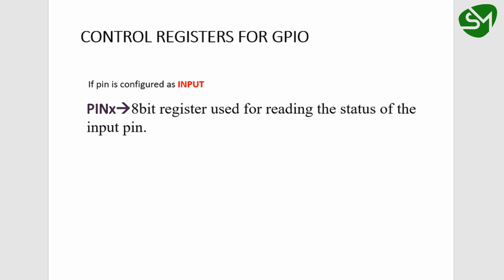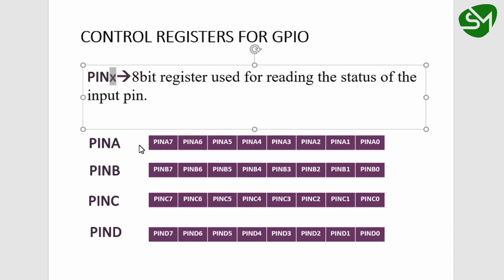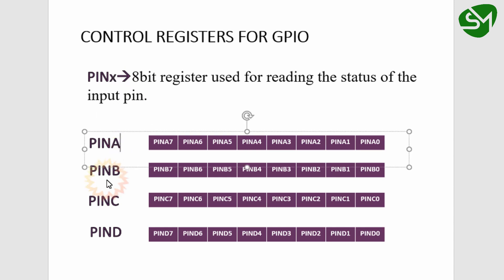The next register is the PINX register. If the corresponding bit is configured as input in the DDRX register, you can read the status of the pin using this PINX register. The small x indicates this is not a constant — the value varies depending on the register being read. We have four PIN registers: PINA, PINB, PINC, and PIND.